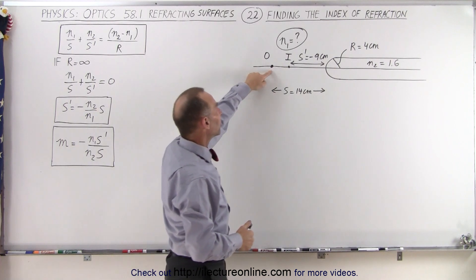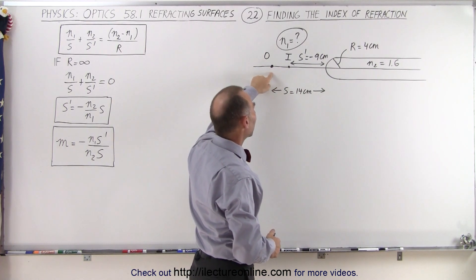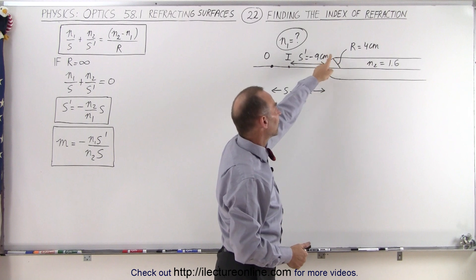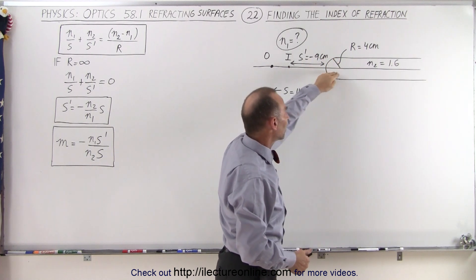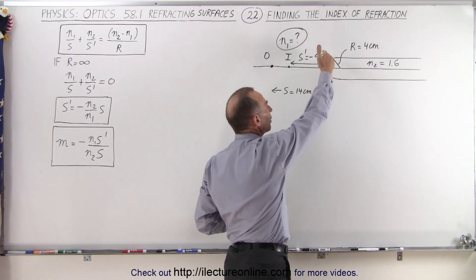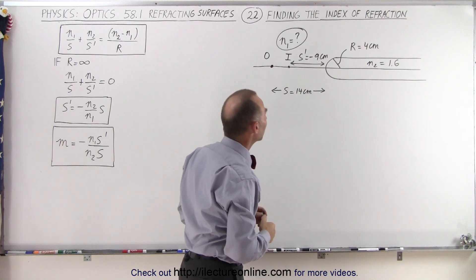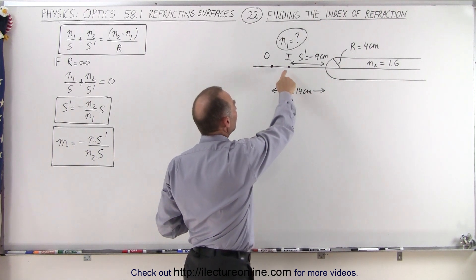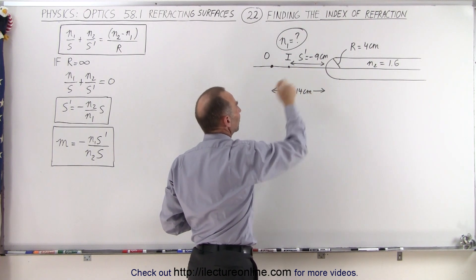We're given that there's an object 14 centimeters to the left of the rod. Here's the boundary between the liquid and the glass rod. It has a radius of curvature of 4 centimeters, and we're told that there's an image 9 centimeters to the left of the boundary.